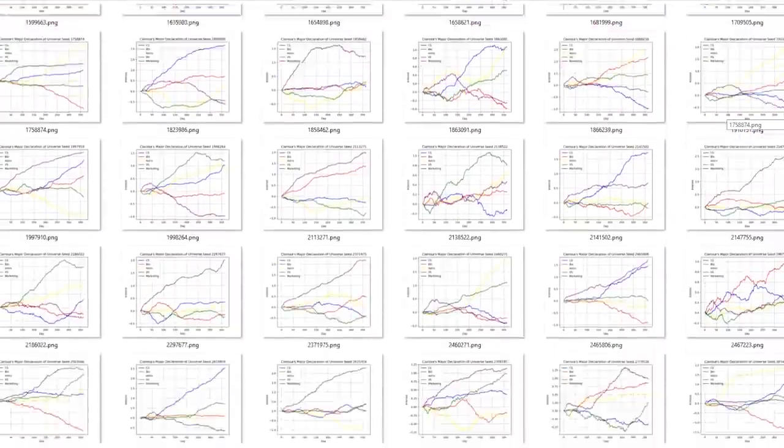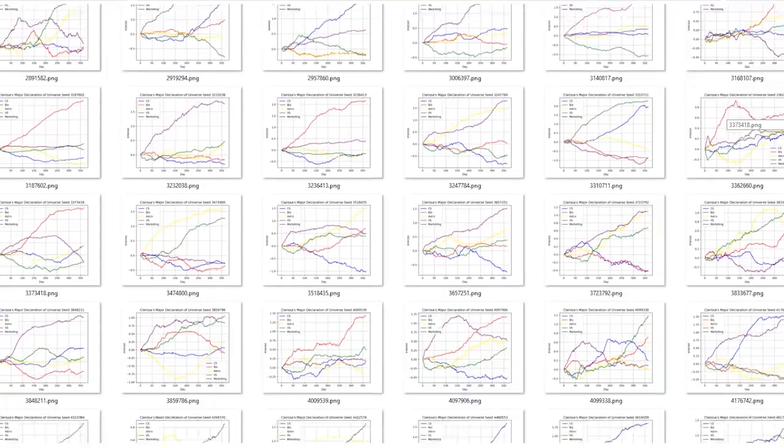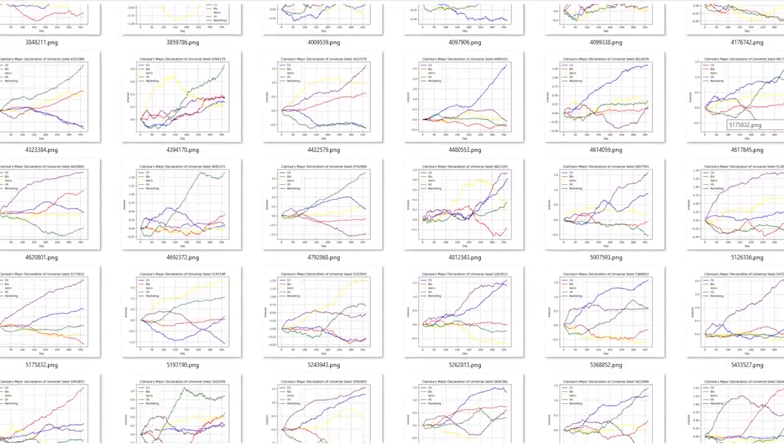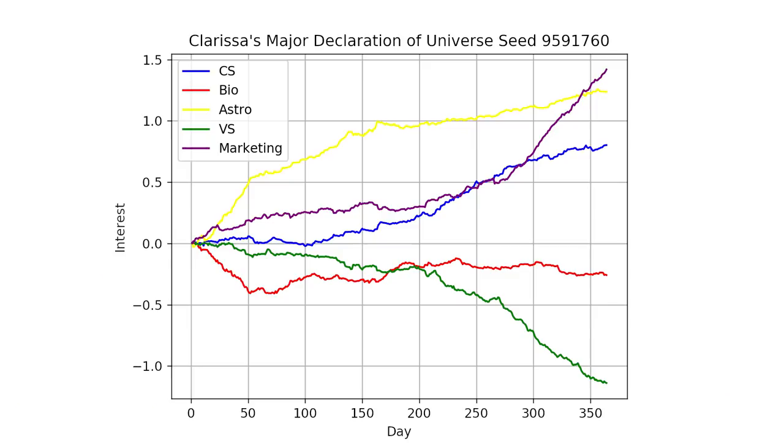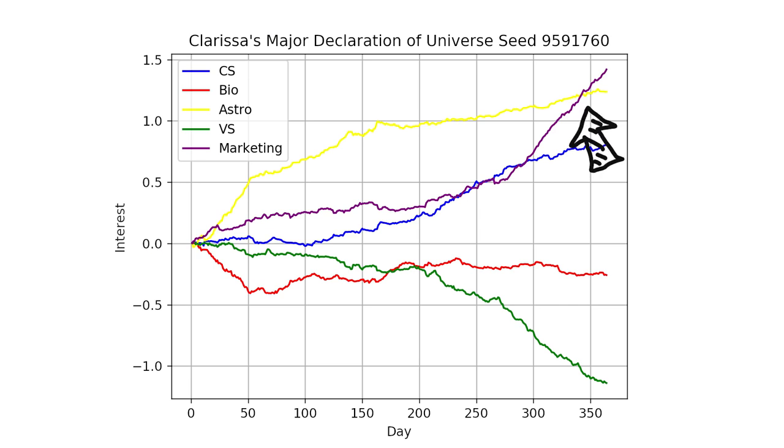Okay, so now we have all of our universes visualized, but which one shall we choose? Universe 959 looks good enough to me. So let's see. She declared marketing as her major of choice. Makes sense. Her mom wanted to do that. Wait, why was astrophysics so close to winning? Why did she hate biology and visual arts so much? Is it due to the influences of her mom, or what's going on here?